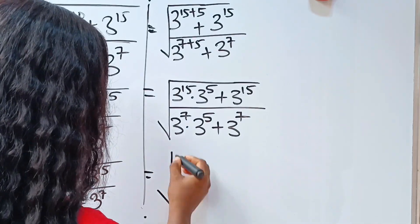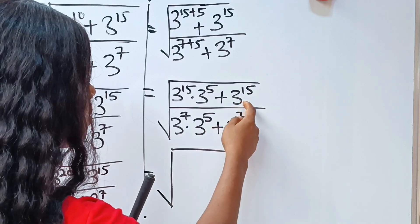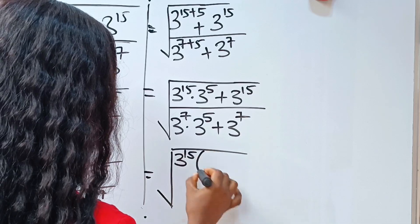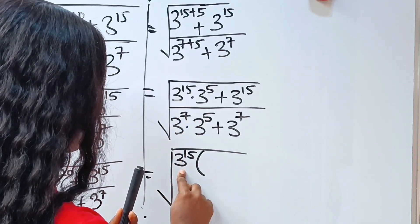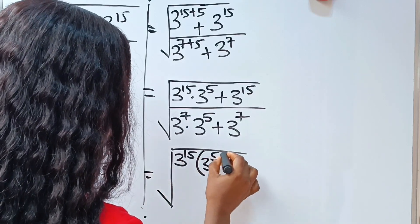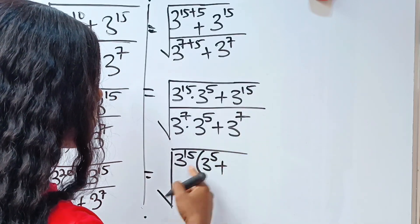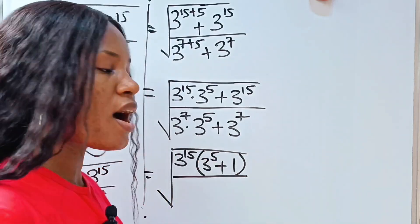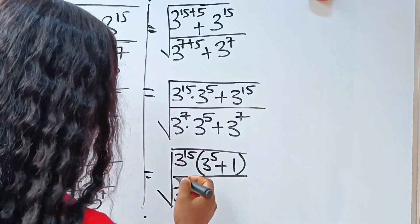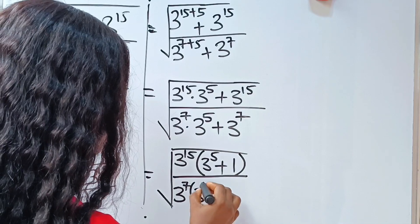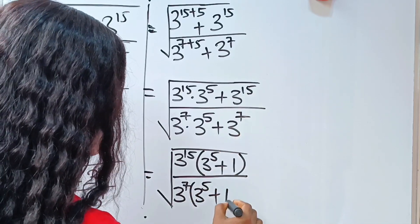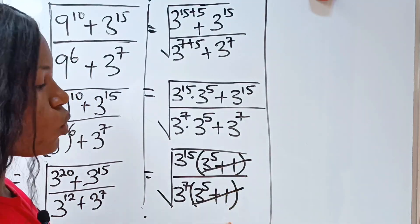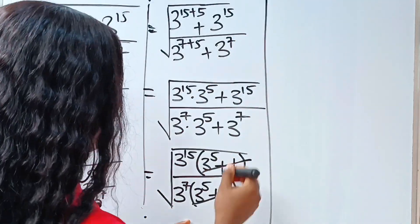Now we can write this as the square root of — we have 3 to the power of 15 in both terms of the numerator, so let's factorize that out. We have 3 to the power of 15 in brackets: when divided, we have 3 to the power of 5 left, plus 1. Divided by — the same thing happens in the denominator, we factorize 3 to the power of 7 out, giving us 3 to the power of 5 plus 1. Now notice that the bracketed factors are the same, so they cancel out.